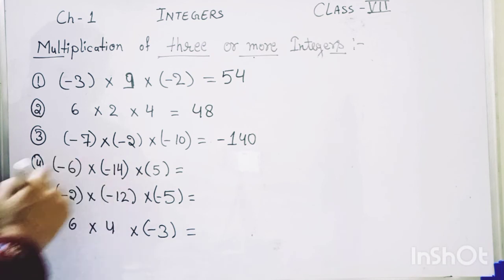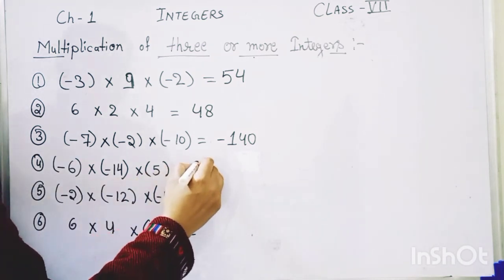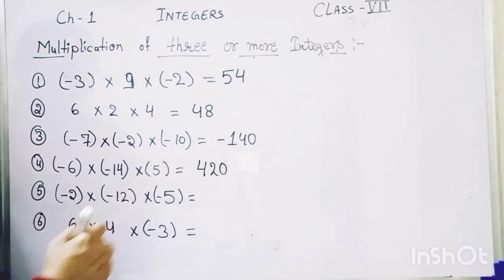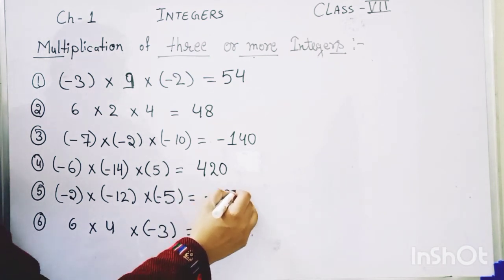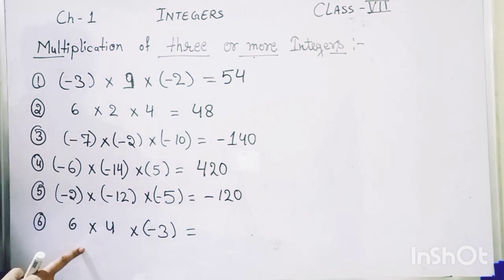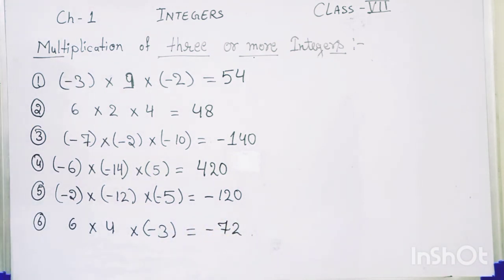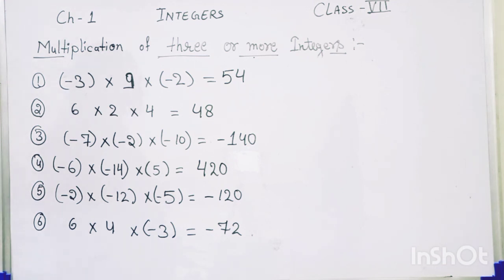So the answer for the fourth one is positive, which is 420. Coming to the fifth: all three are negative, so we have a negative result, which is minus 120. For the last one, two of the integers are positive while the third is negative, so the result is also a negative number. These are the questions based on the rules I told you today. Try to solve your NCERT questions according to these rules. In the next class we will solve more questions and cover more properties. Thank you everyone.